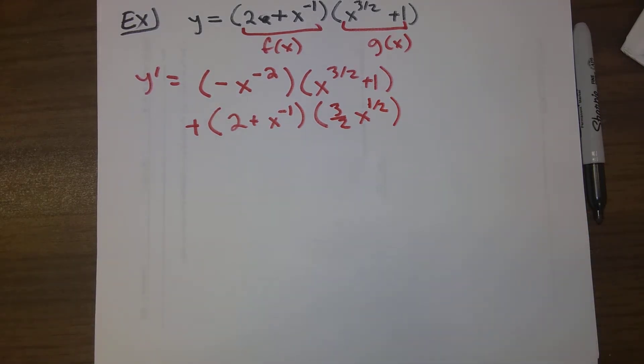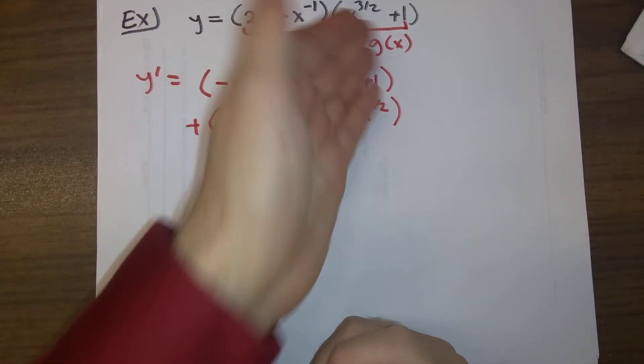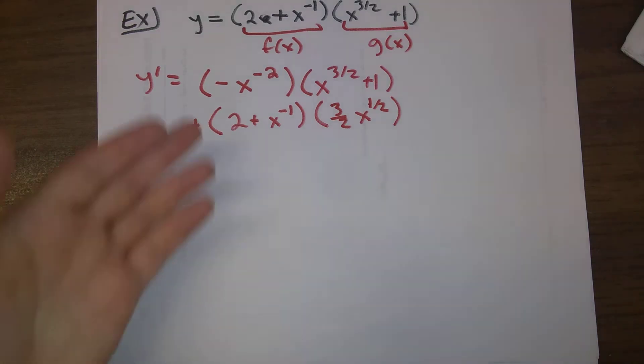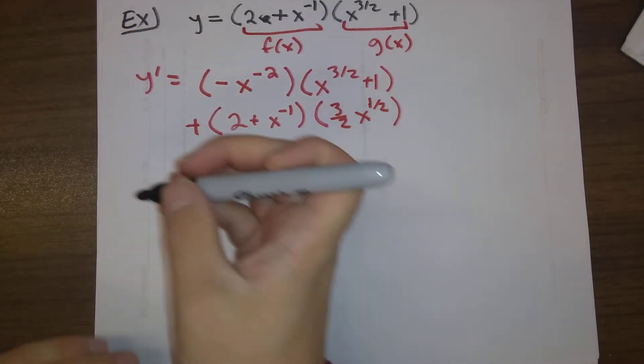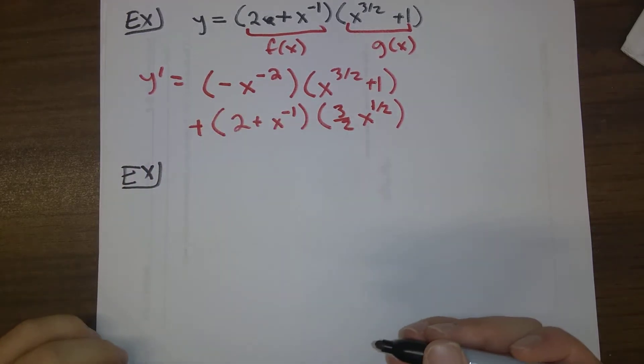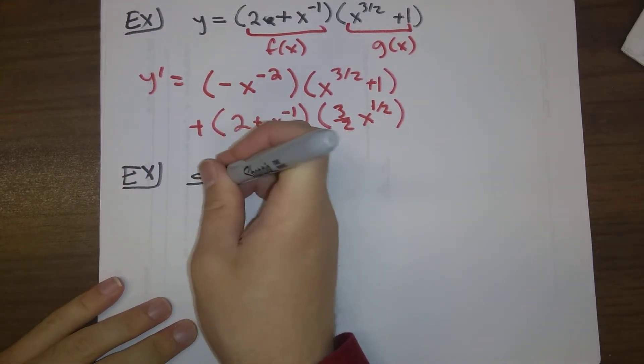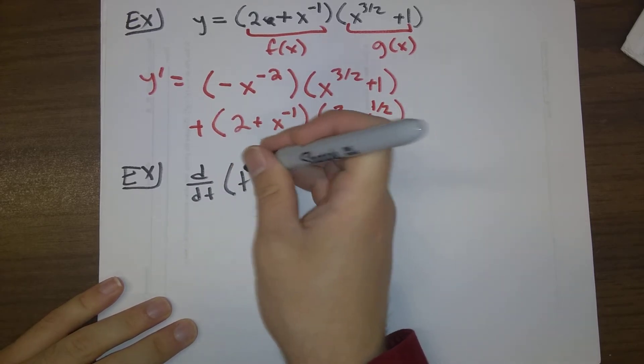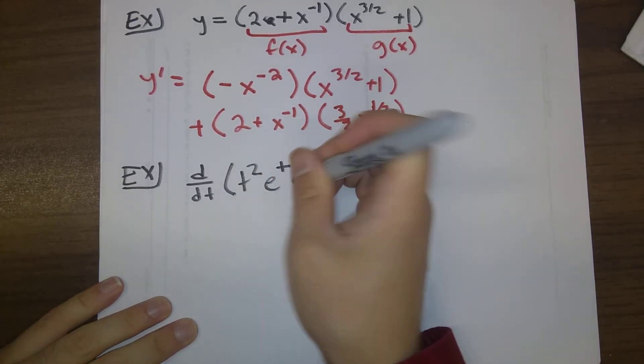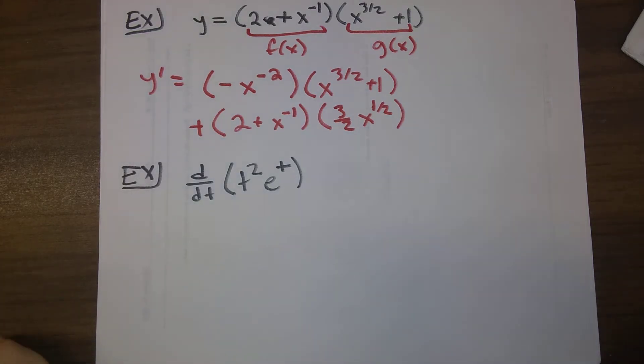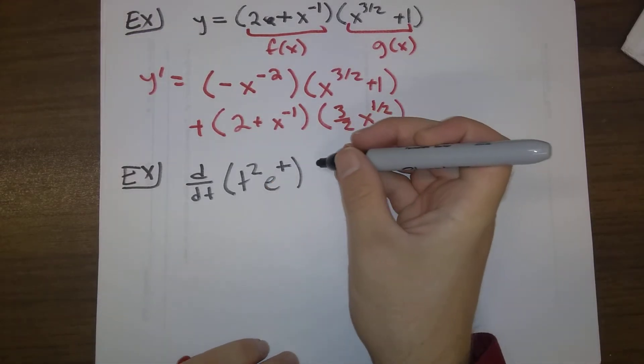You could expand it out if you wanted to, but let's say that you're happy with this as your final answer. Maybe this is easier than distributing out the multiplication. One final example that is very common. This is the sort of calculation that will come up a lot in your future calculus courses. I can already think about where this kind of calculation would come up in calc 2 and integration by parts or in differential equations.